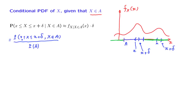In this case, the intersection of the event that X lies in the big set and the event that X lies in the small set is simply the event that X lies in the small set. So the numerator simplifies.